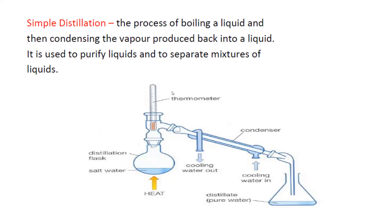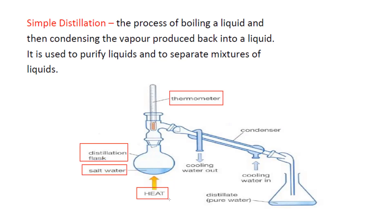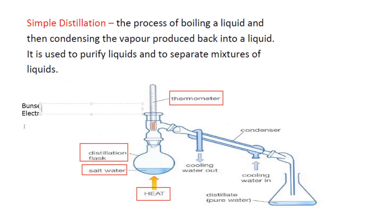You have to learn the labels as well. In an exam, especially in Paper 6, they may ask you to label the apparatus. If pointed at the parts, you should know: thermometer, distillation flask, mixture or salt water. For supplying heat energy, there are different ways — we can use a Bunsen burner or we can use an electrical heater.